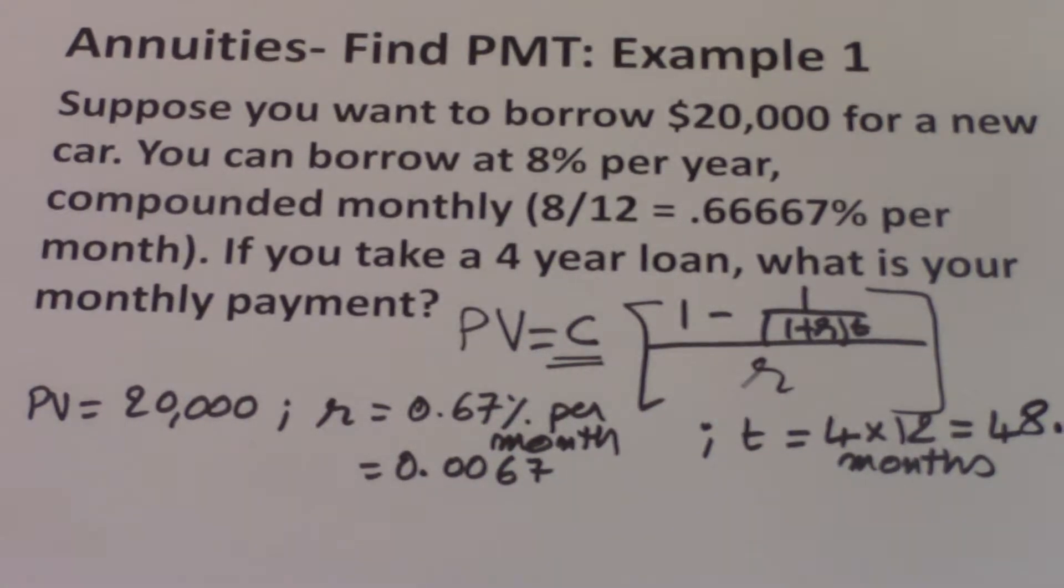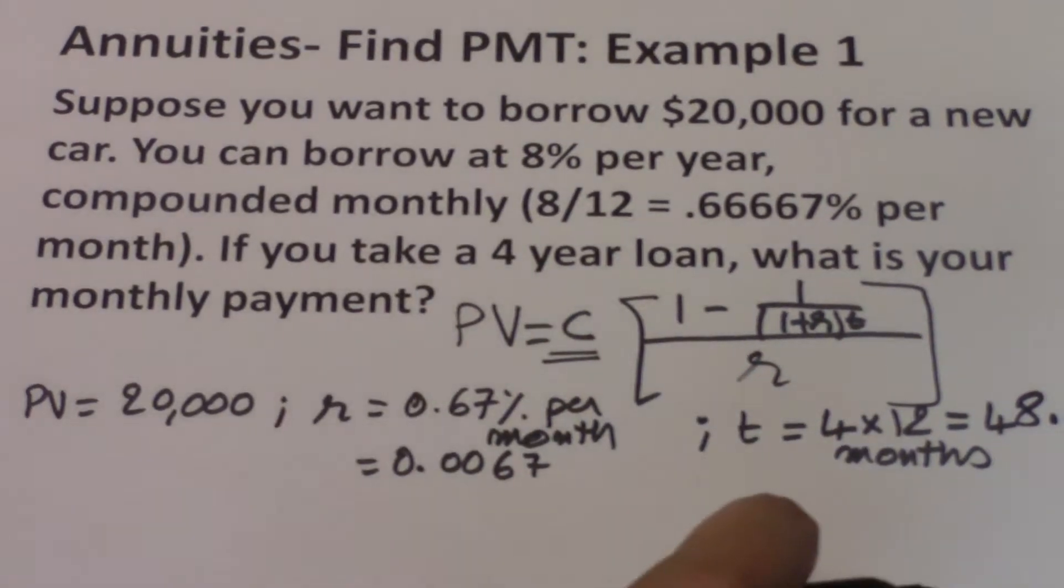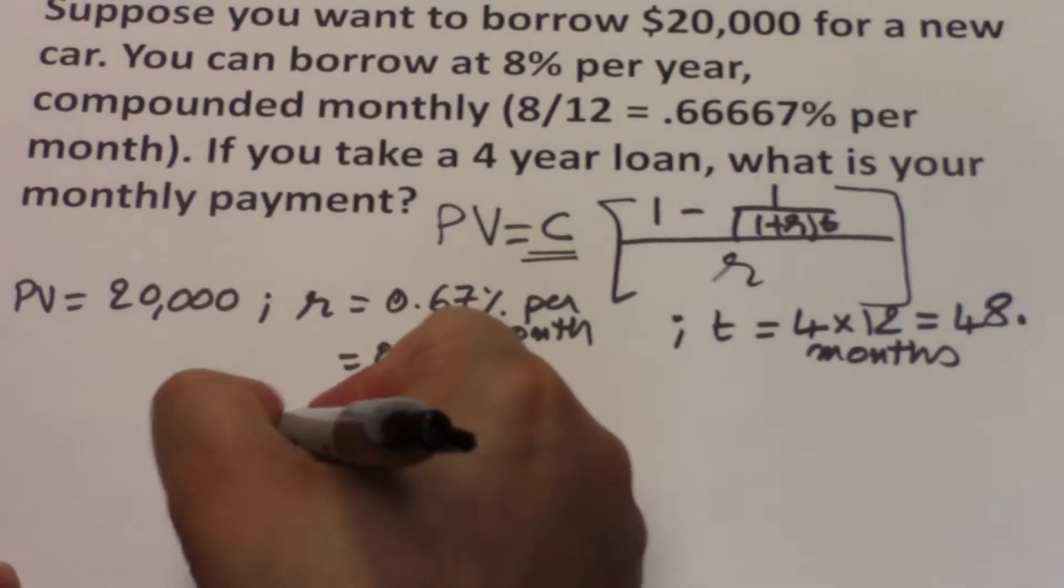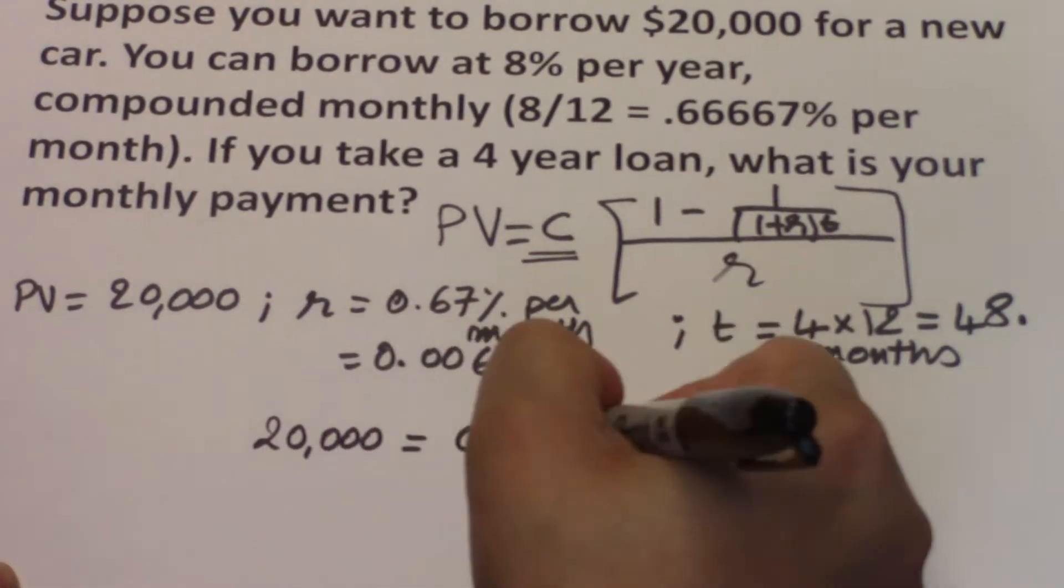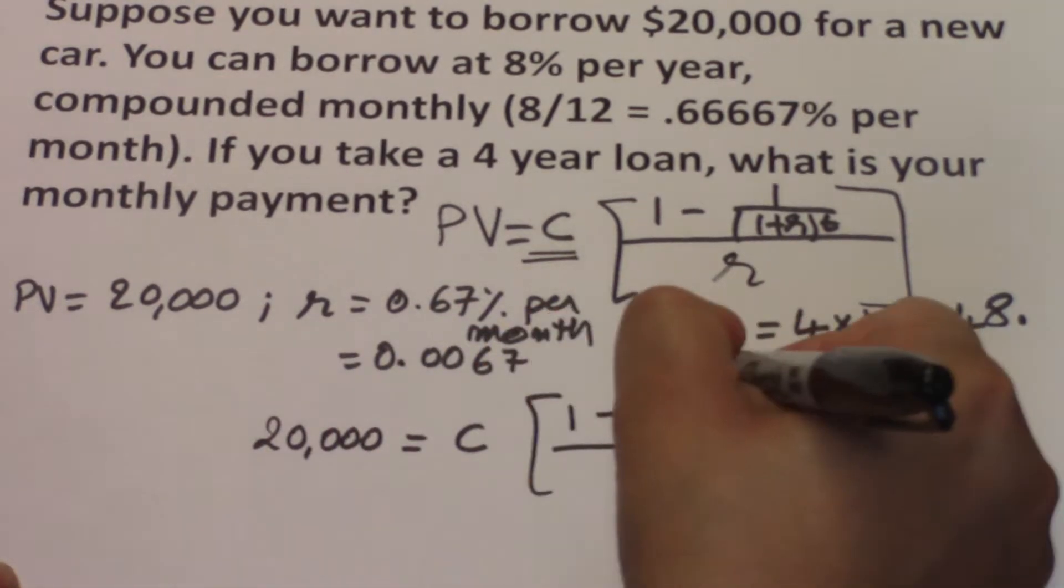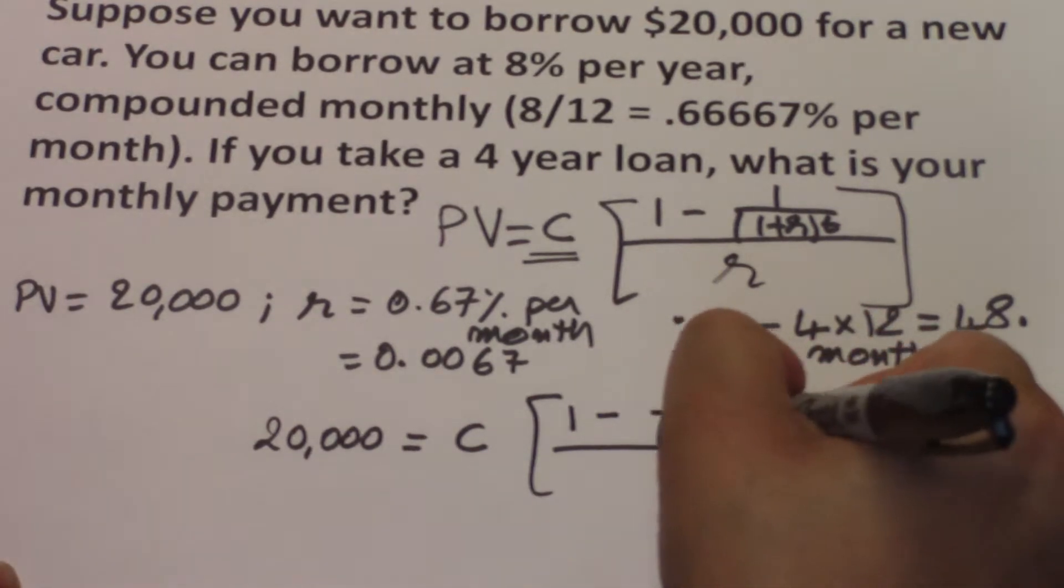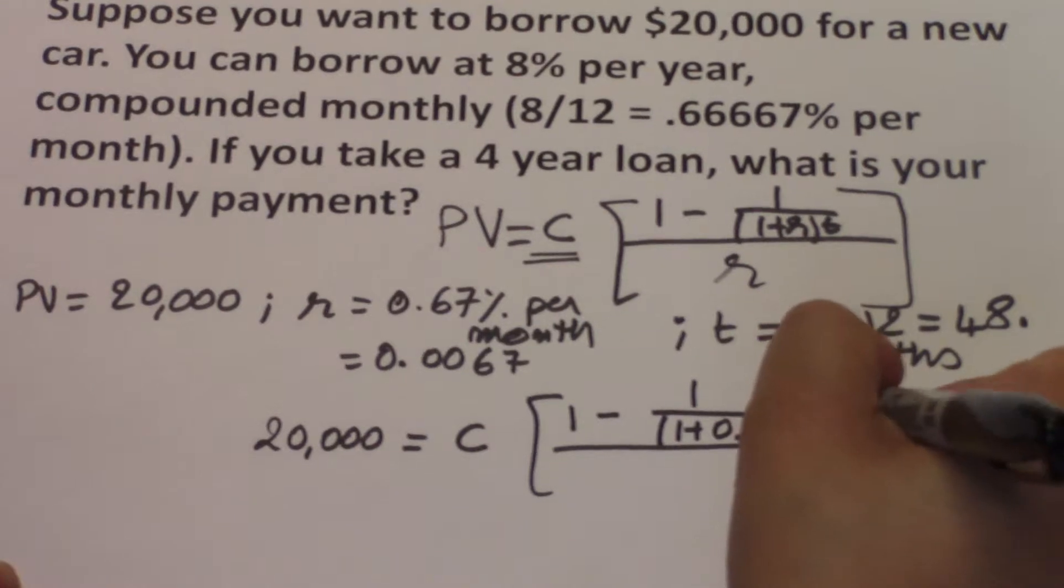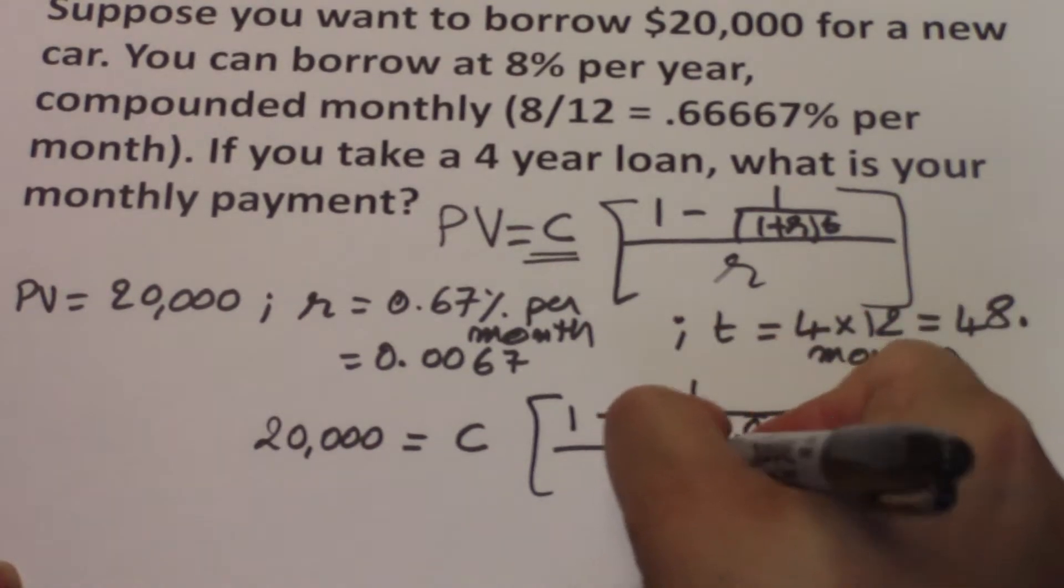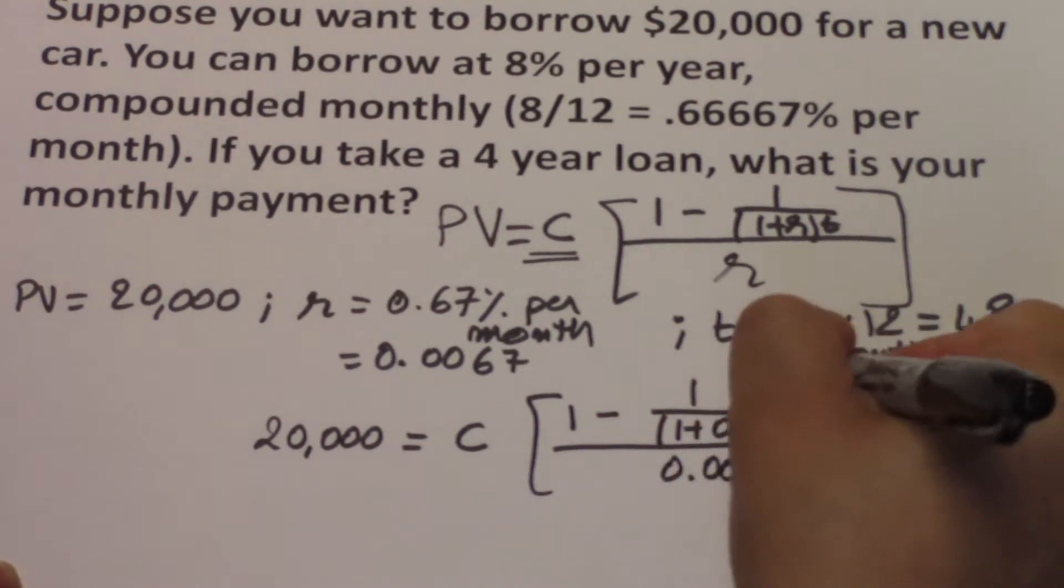We have all of our variables. All we need to do is plug the variables into the formula and find the missing value. So 20,000 equals C times 1 minus 1 over 1 plus 0.0067 to the power of 48, divided by 0.0067.